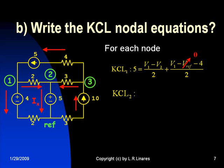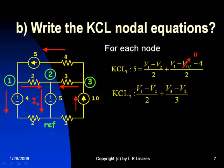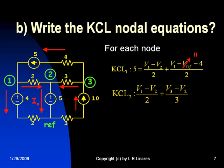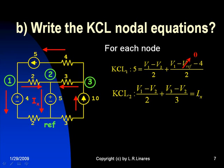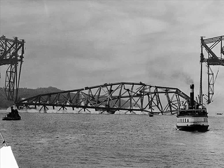KCL for node number two. Currents going in: V1 minus V2 over 2, V3 minus V2 over 3, and that is equal to the current coming out of that node number two, which happens to be the evil unknown current Ix. Two down, one to go. KCL 3.